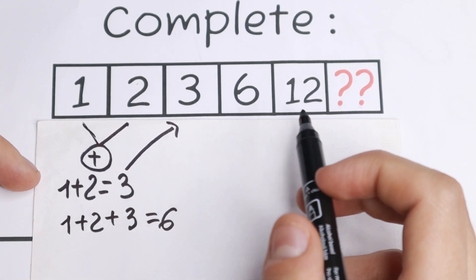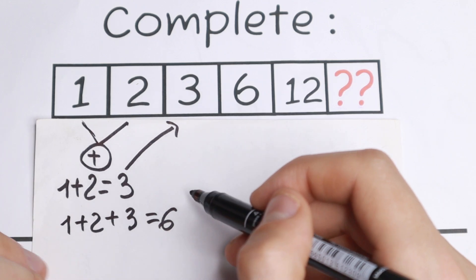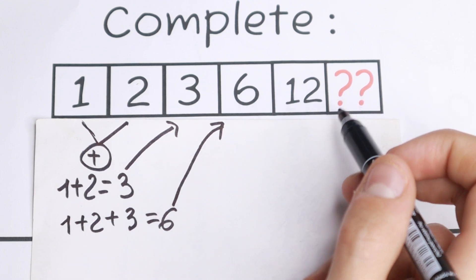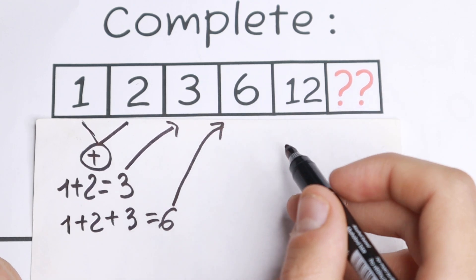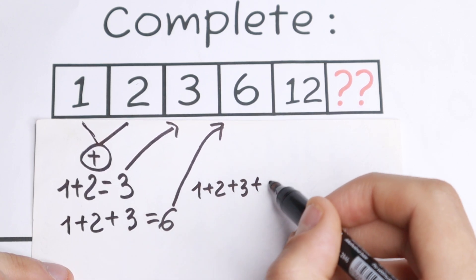So as you can see in the first case, I add the first two digits, and in the second case I add the first three numbers. We will have 6. What are we going to do next? Let's use the same logic. We will have the next case 1 plus 2 plus 3 plus 6.